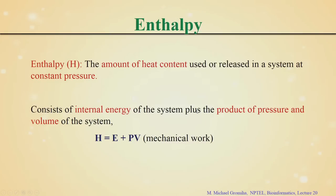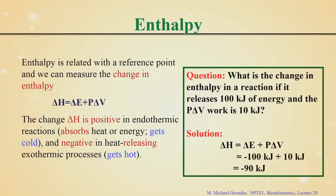Enthalpy is the amount of heat used or released in a system at constant pressure. Enthalpy consists of two terms: the internal energy of a system plus the product of pressure and volume, which is mechanical work. Since enthalpy can be obtained relative to any reference point, we use the change in enthalpy — delta H — which equals delta E plus P times delta V, the change in volume and internal energy of a system.